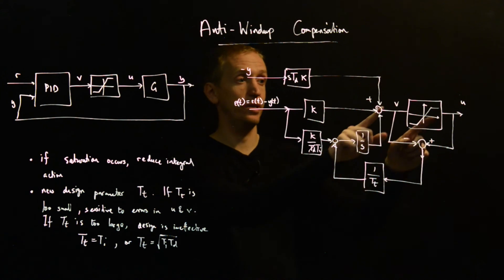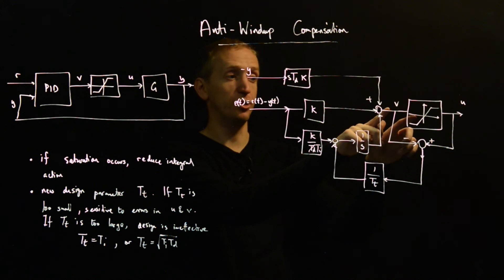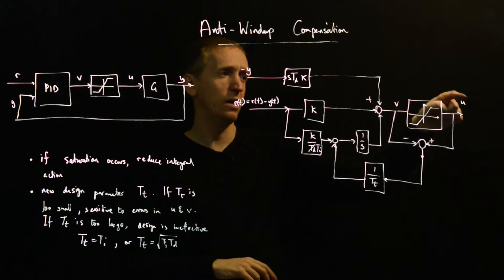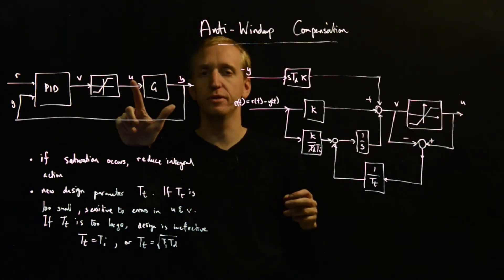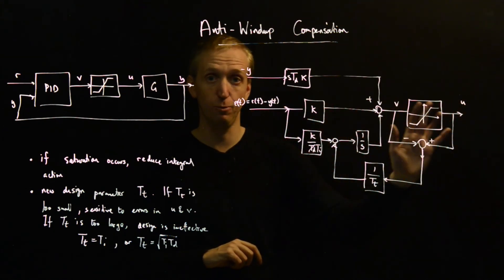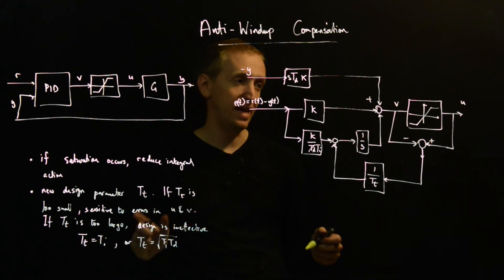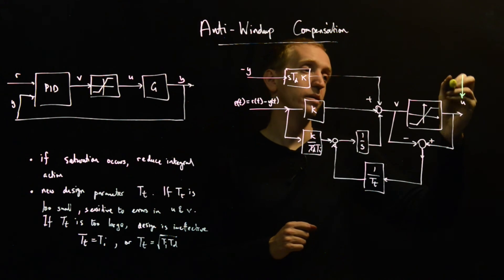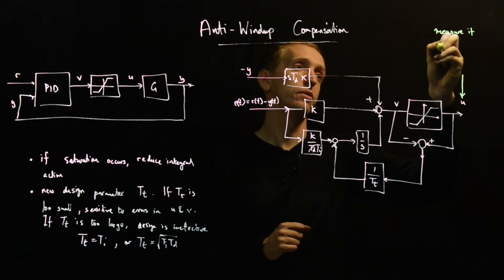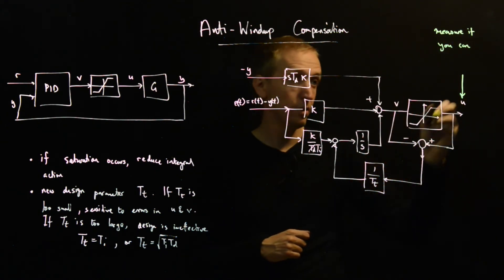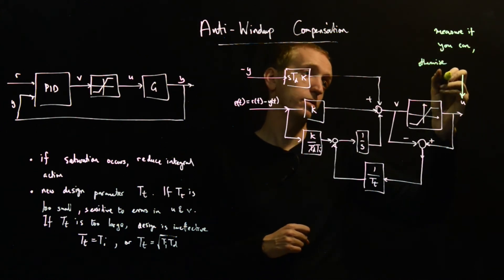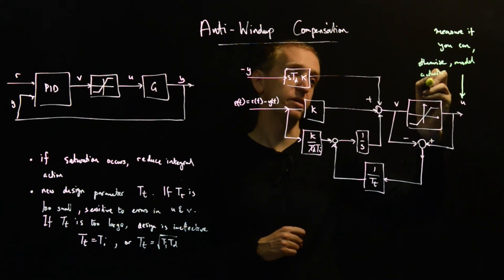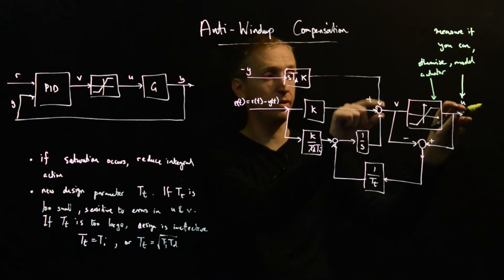Implicit in what I've just described to you is that we can actually measure two signals here. So we're able to measure, well, V we know because this is what we decide with our controller. So this is what we're asking of the system. This is the input to the system. This setup here, we need to know the output of our actuator. So we actually need another measurement in order to implement this anti-wind-up scheme. If you don't have this, you can either, then you can just replace this with a model of the actuator. So you want to measure if you can.